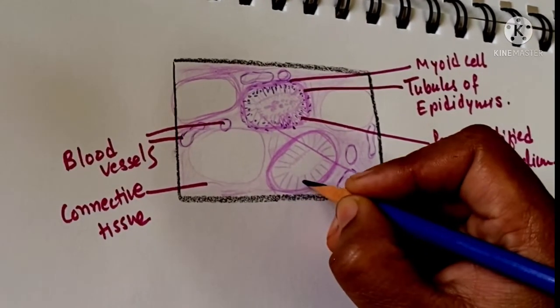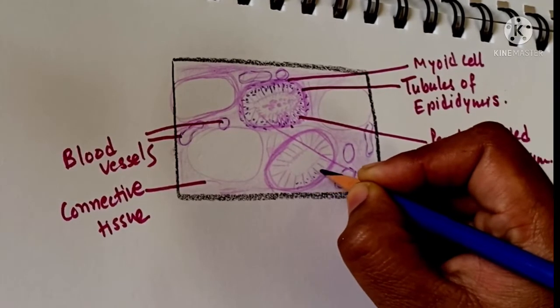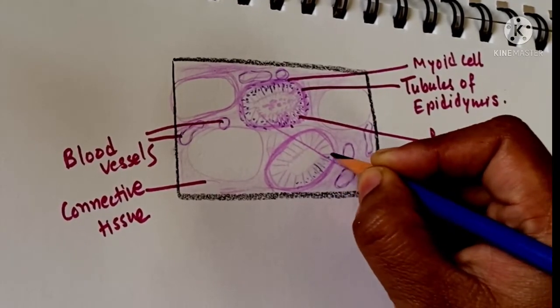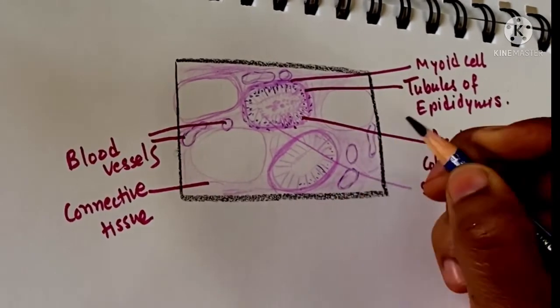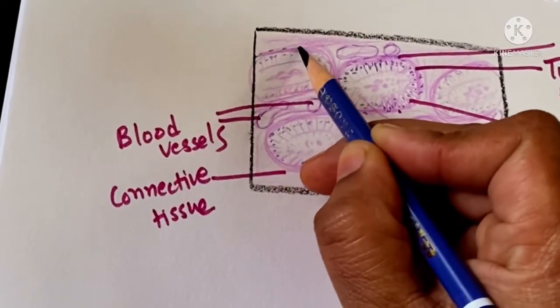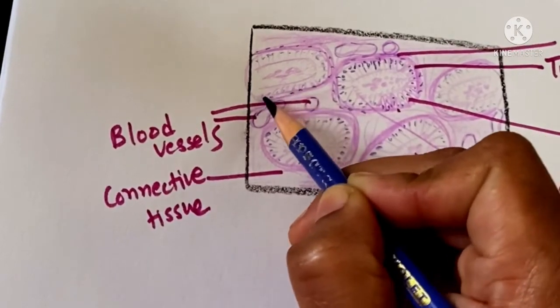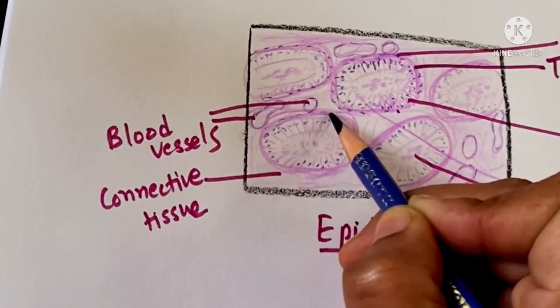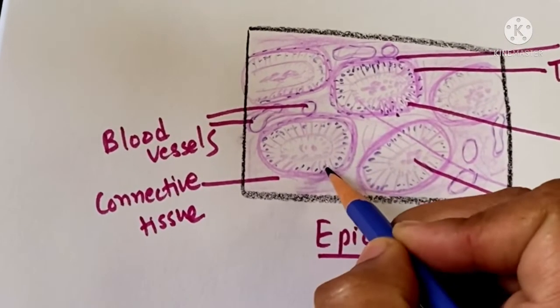When we differentiate between the testis and the epididymis: in epididymis, we can see the thick muscular wall of the tubules, and in the lumen we can see clear and regular lumen. In the epithelium, we can see the nucleus in the basal part.